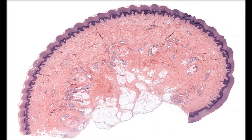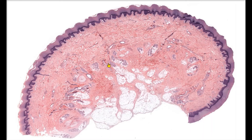Our next type of dense connective tissue is called dense irregular connective tissue. The slide we're looking at should be familiar because we saw it earlier in the lab. We can see two layers present in this thick skin slide. The upper layer, shown in dark purple, is the epidermis and contains a keratinized stratified squamous epithelium. We're going to focus down on the lower layer, the dermis. Let's zoom in so that we can see the tissue present in the dermis.